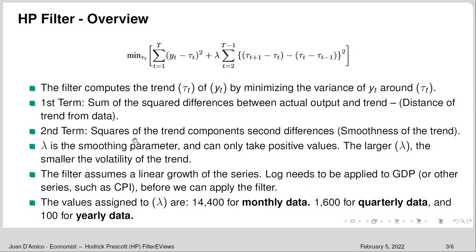Lambda is a smoothing parameter and can only take positive values. The larger the value of lambda, the smaller the volatility of the trend. The filter assumes linear growth of the series, so you will need to apply logs when working with GDP or other series such as CPI. The values assigned to lambda are 14,400 for monthly data.